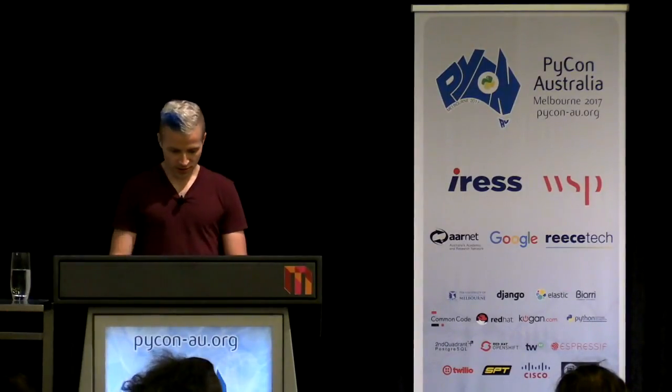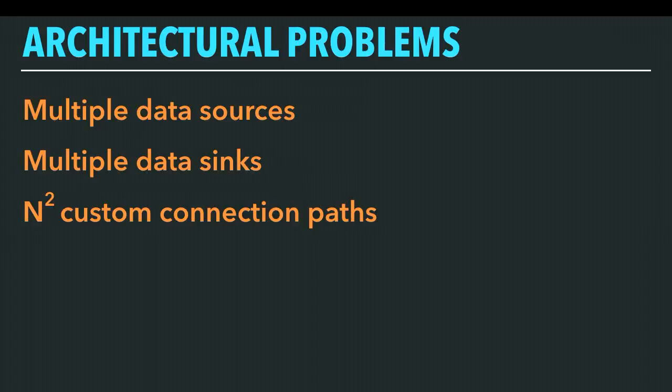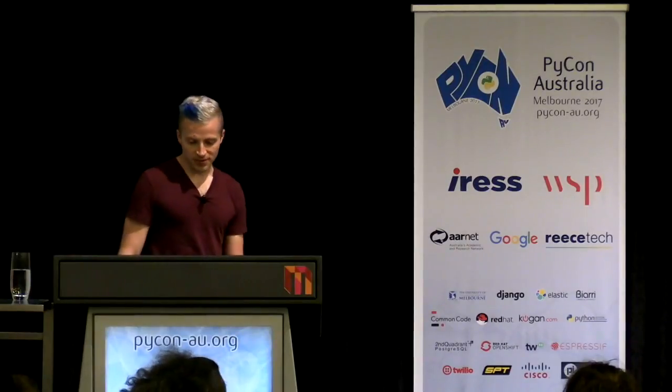First, we had architectural problems — there are multiple sources of data and multiple destinations for it. There was some code reuse, but each new type of system required major work to add, and even new things from systems we already knew about had to be hand-configured. The growth trend is clear: if you have a graph with N nodes in it, the connections between them grows as N squared.